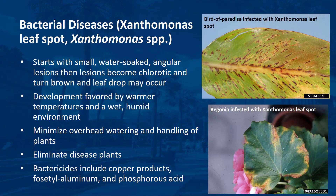Small water-soaked angular lesions appear on the leaves as the first sign of infection of Xanthomonas leaf spot. These lesions become chlorotic and eventually turn brown. When infections are severe, leaf drop may occur. Summer conditions with warmer temperatures and a wet, humid environment favor Xanthomonas development.